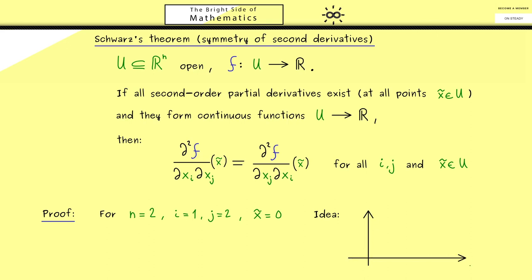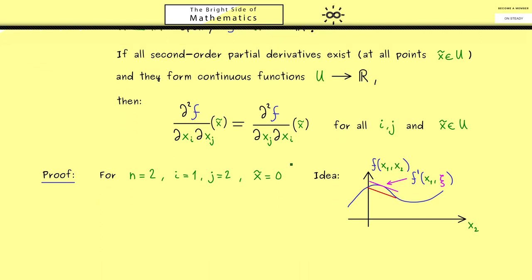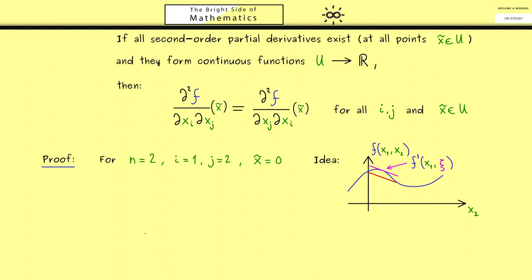The general idea is that we will apply the mean value theorem in two directions: the x1 direction and the x2 direction. In this case, the x1 variable is fixed and we change the x2 variable, giving us a usual one-dimensional function. By the mean value theorem, each secant slope has a corresponding tangent slope, so we find an intermediate point ξ corresponding to the second variable x2. The idea is to apply the MVT first in the x2 direction then in the x1 direction, then the other way around, and show the order doesn't matter — and in that last step we will need the continuity of the two functions.